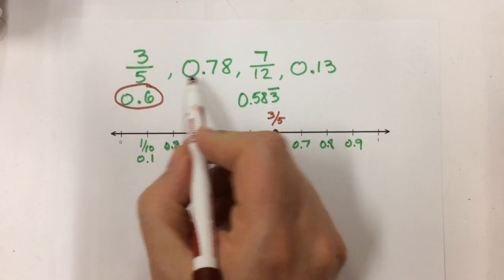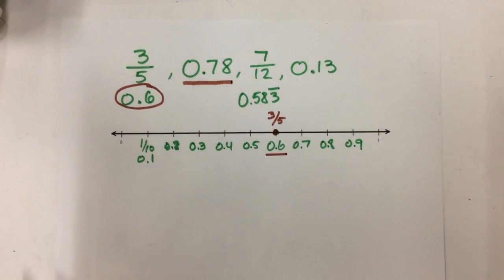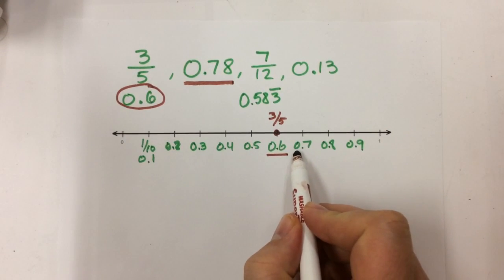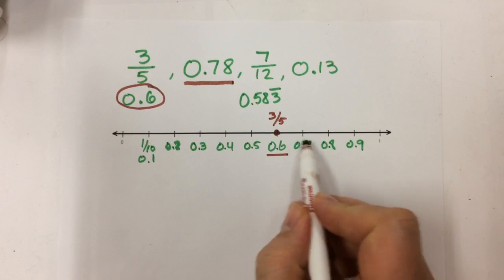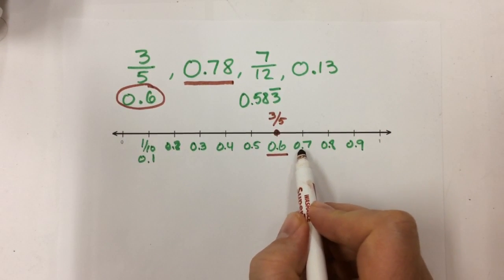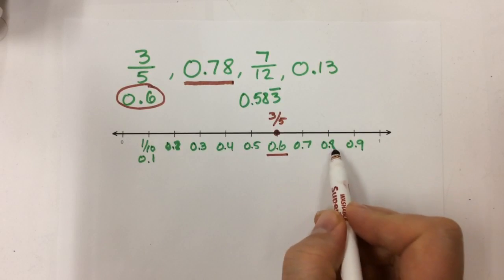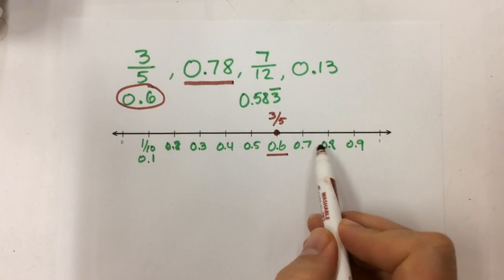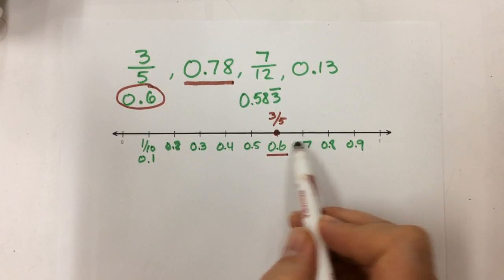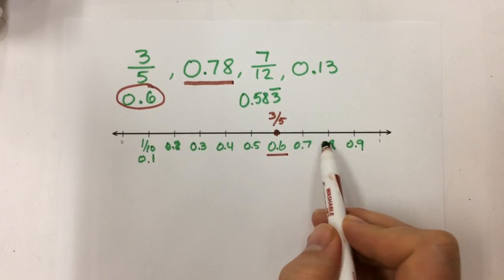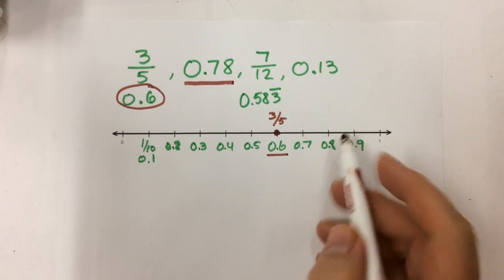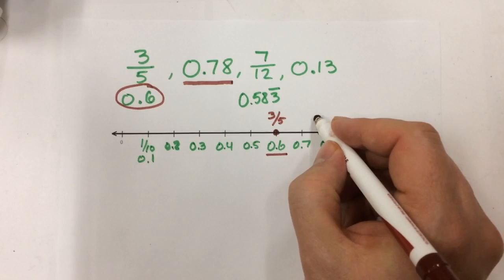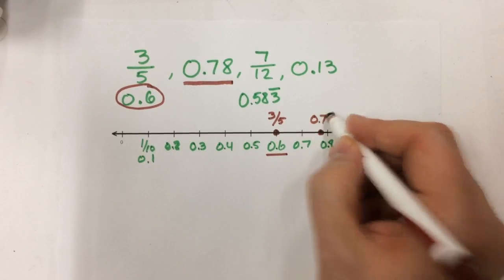Now I'm going to look at the next number, in this case 78 hundredths. Here's 7 tenths or 70 hundredths, here's 8 tenths. 78 hundredths would be between 7 tenths and 8 tenths, but closer to the 8 tenths. So right about there. I'm going to label that one.